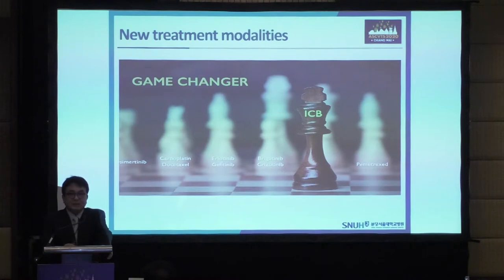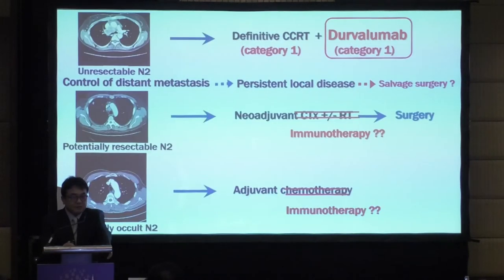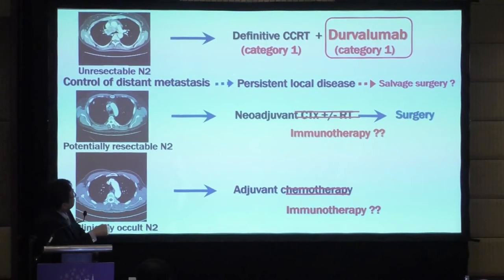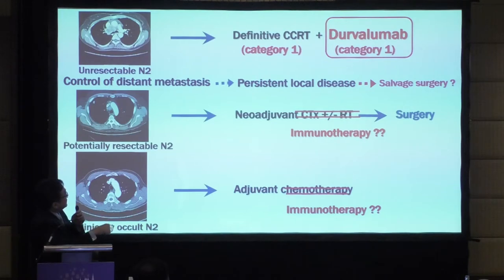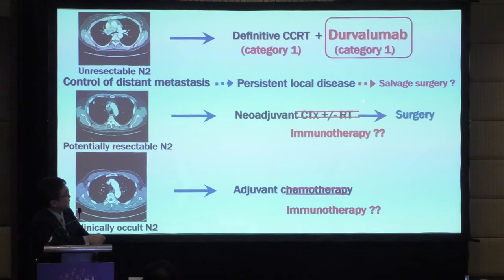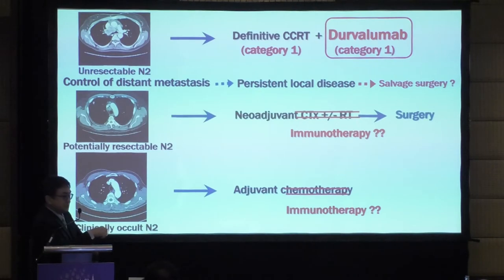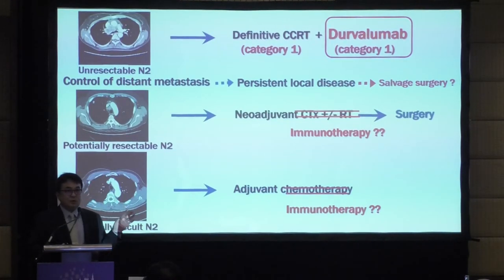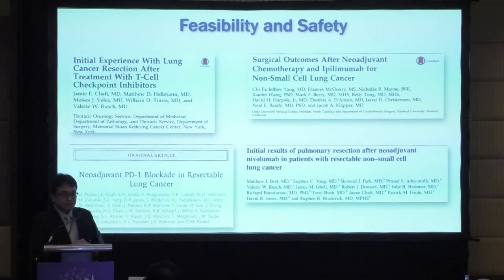ICB is a kind of game-changer in lung cancer management. For unresectable N2, because immune checkpoint inhibitors show excellent treatment outcomes, even unresectable patients can potentially come for salvage surgery after immunotherapy. The neoadjuvant therapy regimen can change from platinum-based chemotherapy to immune. I think ICB can be a game-changer, and our surgical role can potentially increase.